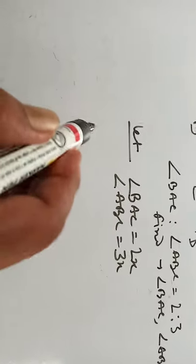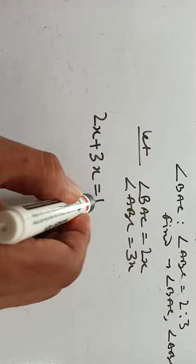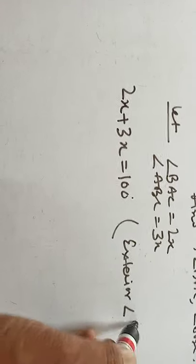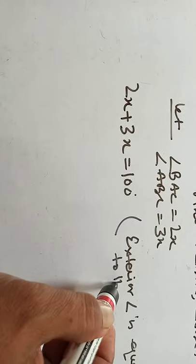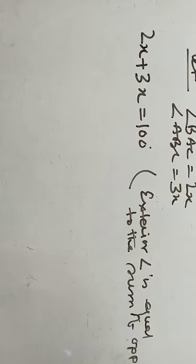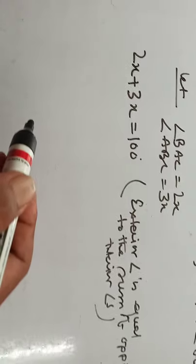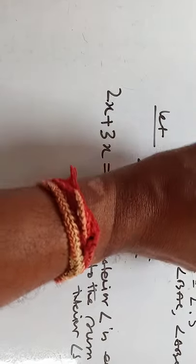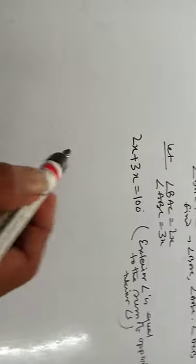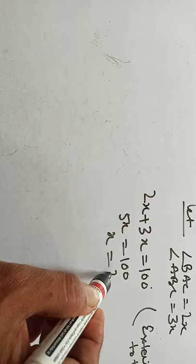Now, we know that the external angle — that means 2x plus 3x equals 100 degrees. Because the exterior angle is equal to the sum of opposite interior angles. That means 5x equals 100, so x will be 100 divided by 5, which is 20 degrees.